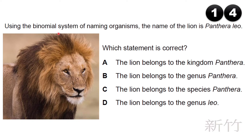Using the binomial system, the name of the lion is Panthera leo. Which statement is correct? The lion does not belong to the kingdom Panthera — that is wrong. Panthera is the genus and leo is the species. So the correct statement is B: the lion belongs to the genus Panthera.